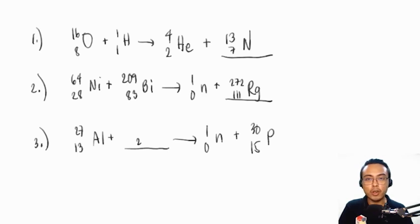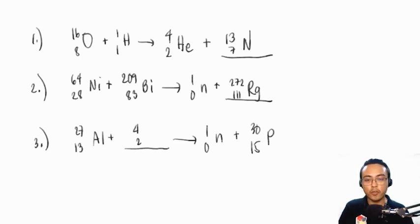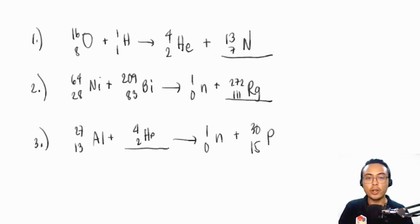For the last example, a reactant is missing. Looking at the product side, atomic numbers total 15; on the reactant side we need to add 2. For mass numbers, products total 31 and reactants show 27, so the difference is 4. A mass number of 4 and atomic number of 2 — this is an alpha particle, a positively charged helium atom.